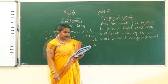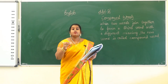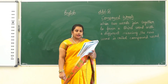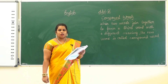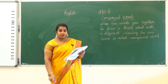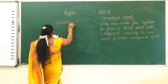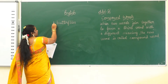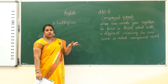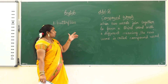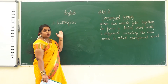Now let's move on to the exercises. First exercise: underline the compound words in these sentences. Sentence one: 'I had butterflies in my stomach before the dance recital.' The compound word here is butterflies — butter has a different meaning and flies has a different meaning. Both combine to form a compound word. So we underline butterflies.